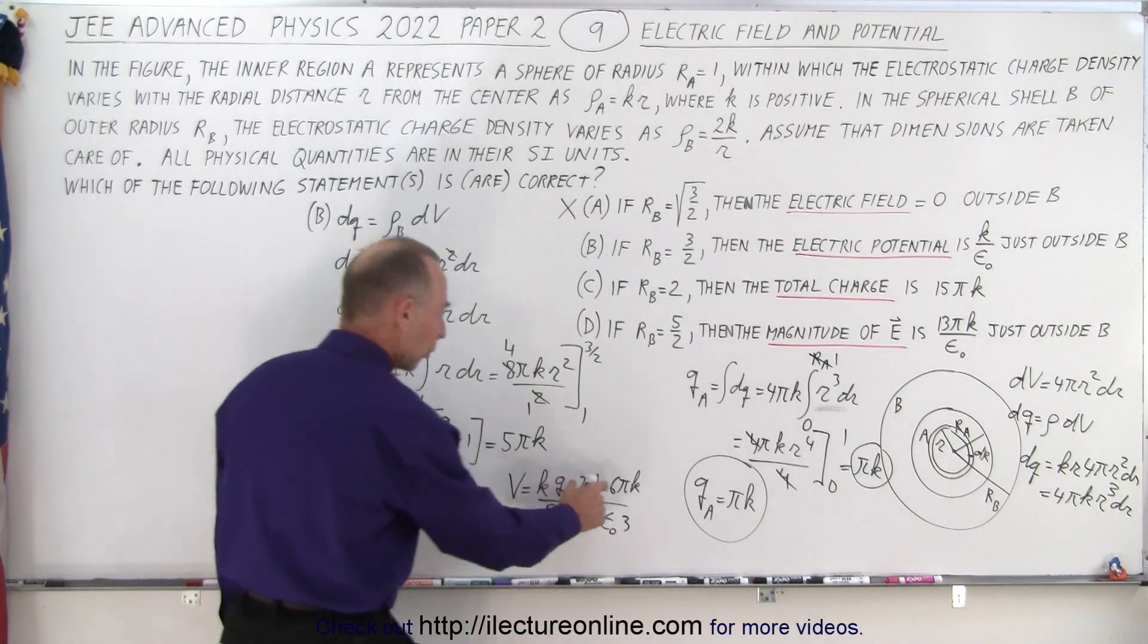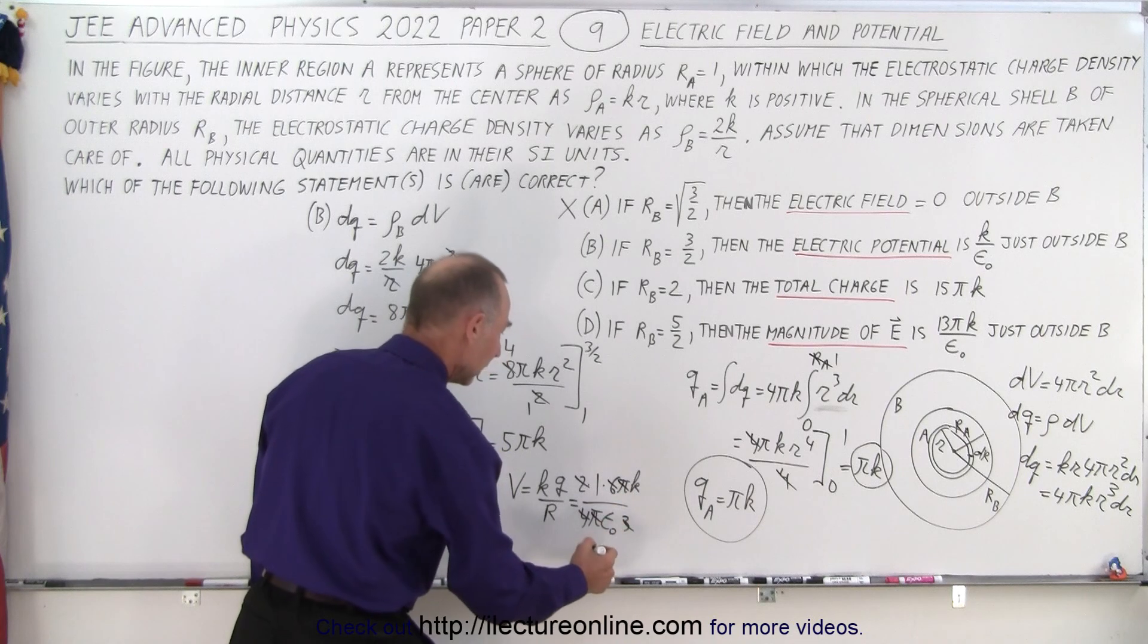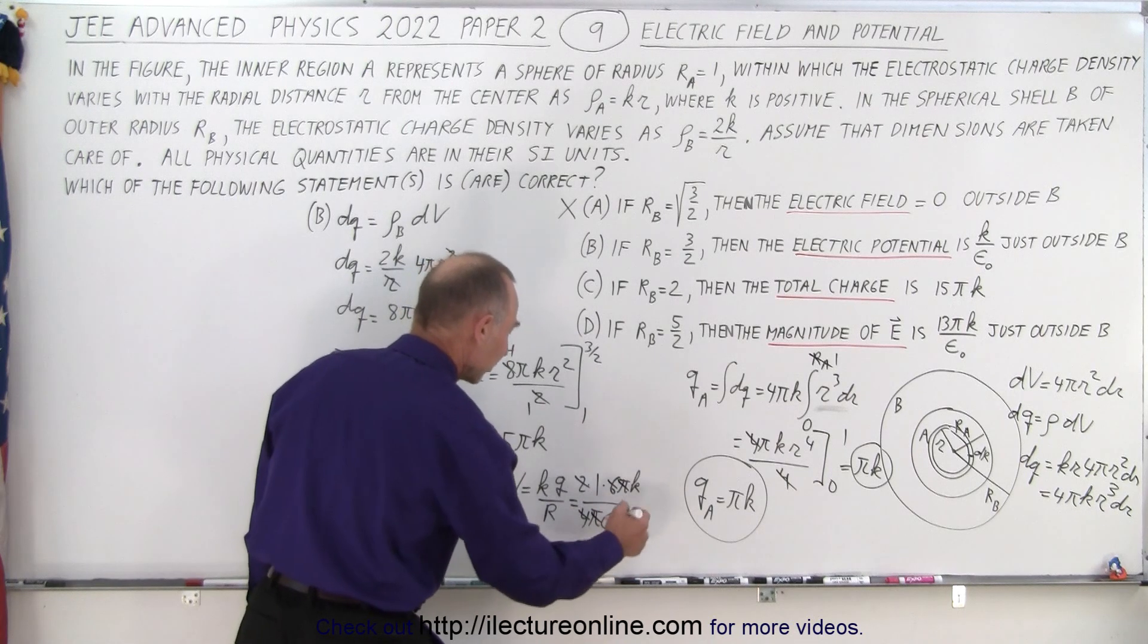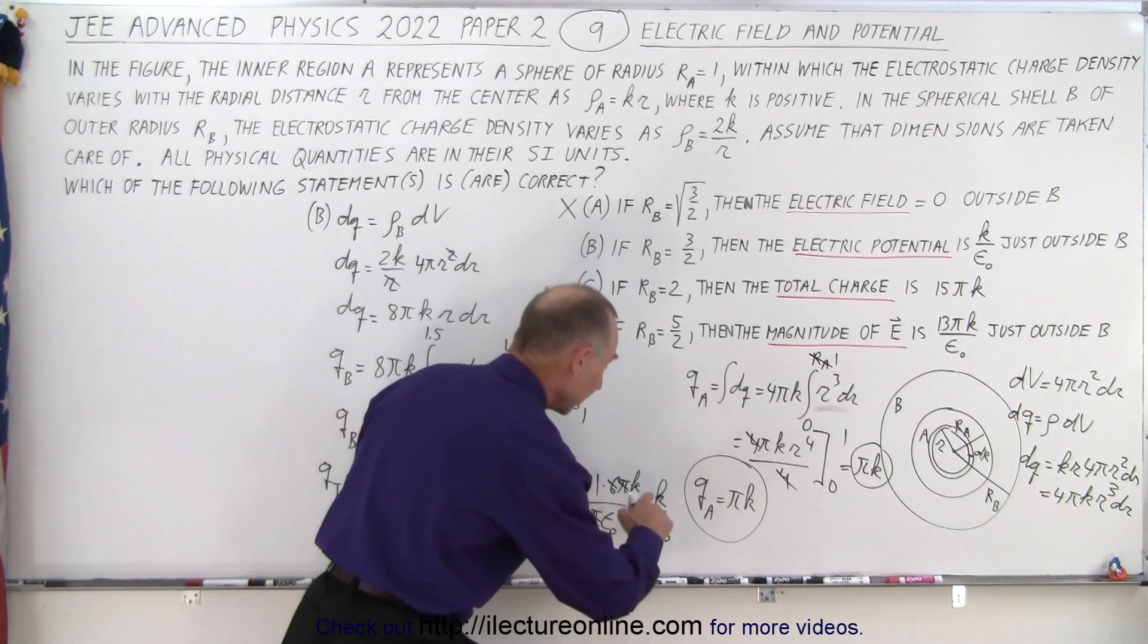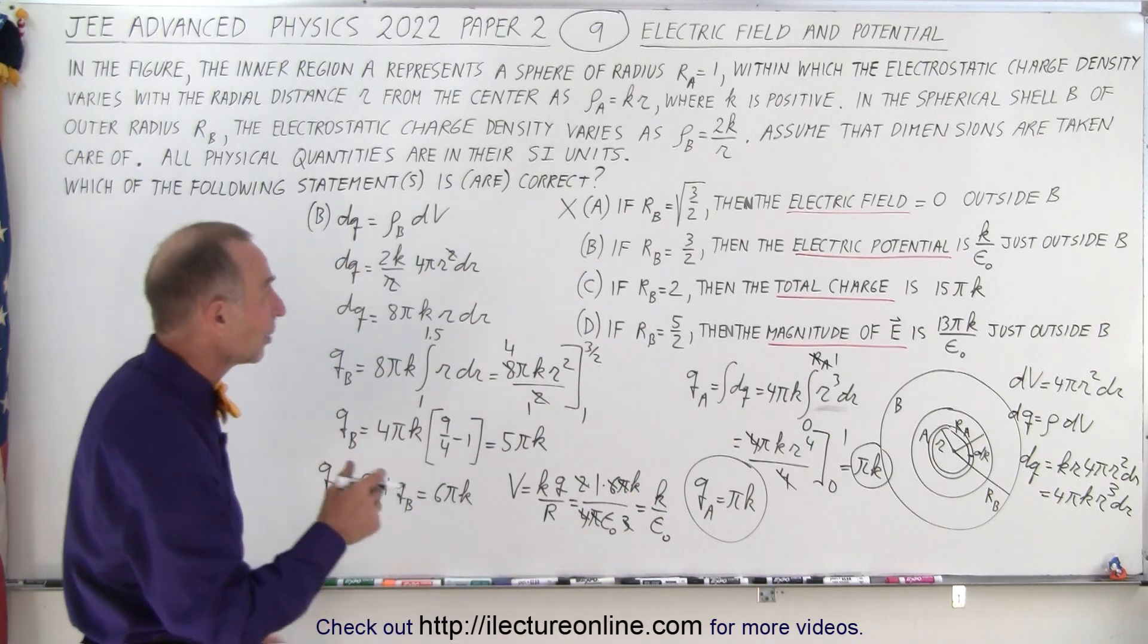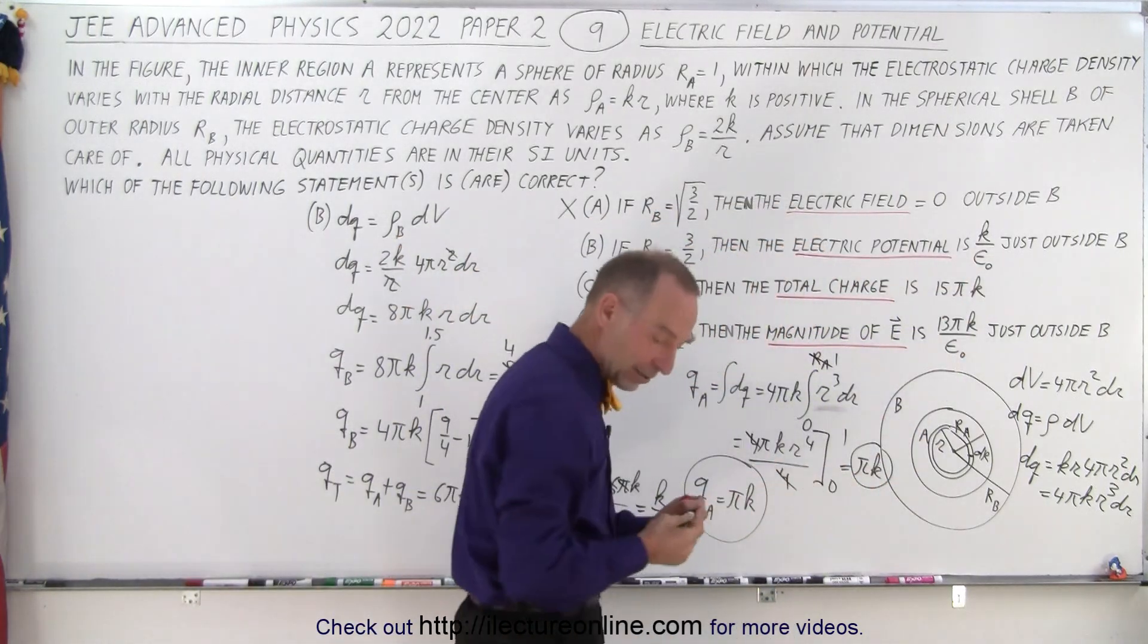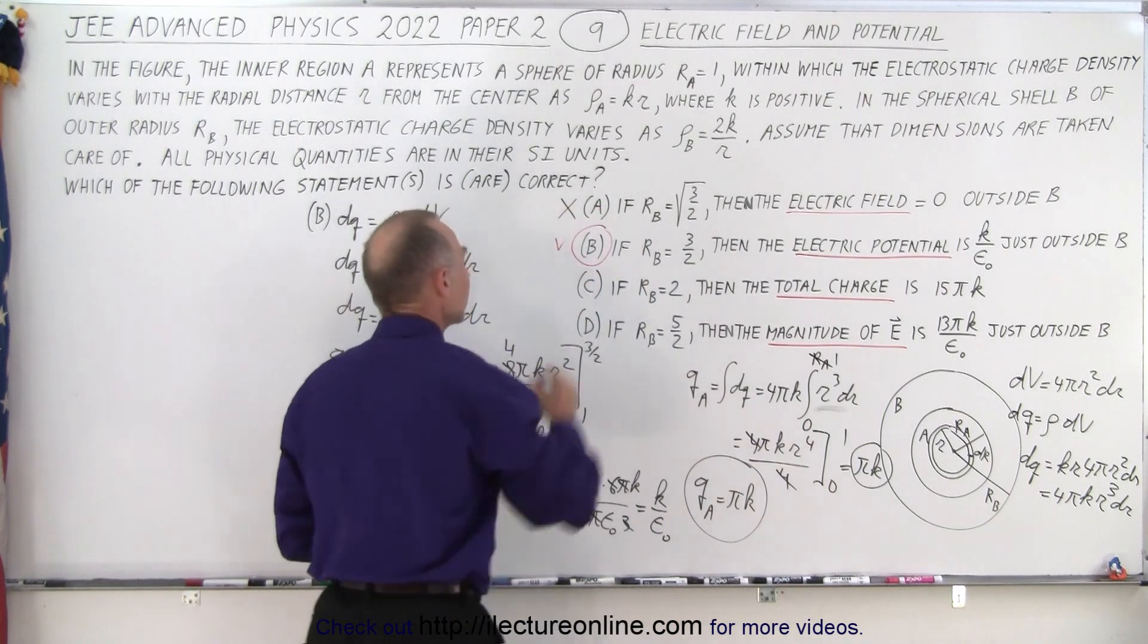So notice we have 12 in the numerator, 12 in the denominator, so that all cancels out. We have pi and pi, that leaves us with k over epsilon sub not. So, in our calculation, that's the potential just outside sphere B, and does that match what we have here? And the answer is yes, it does. And so therefore we can say that B is one of the answers.